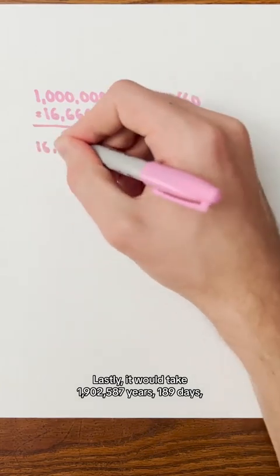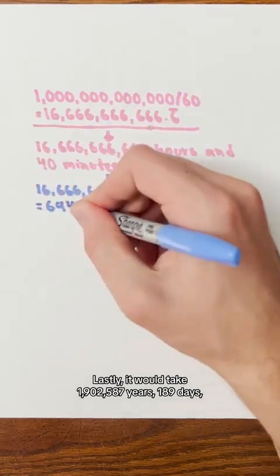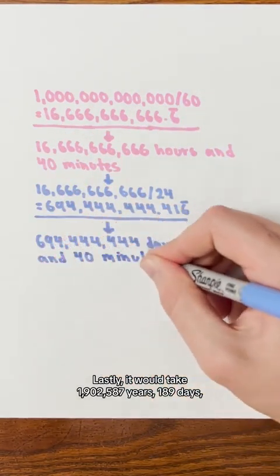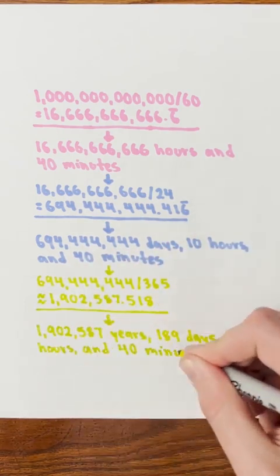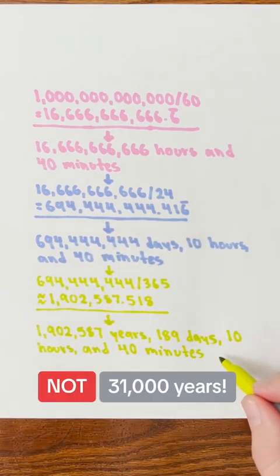Lastly, it would take 1,902,587 years, 189 days, 10 hours, and 40 minutes to get 1 trillion dollars. Not 31,000 years.